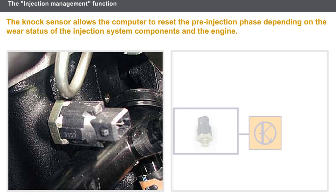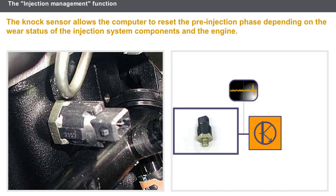Some systems use a knock sensor. The knock sensor is a piezoelectric type sensor fitted to the engine block. This sensor detects the real point of the pre-injection phase, allowing the computer to reset the pre-injection phase depending on the wear status of the injection system components and the engine.